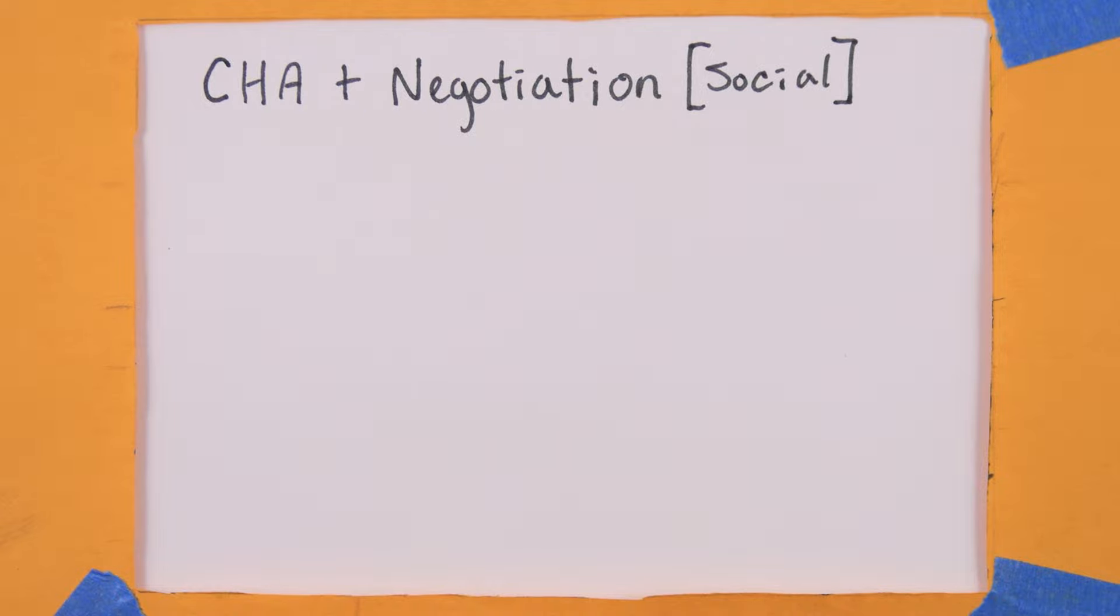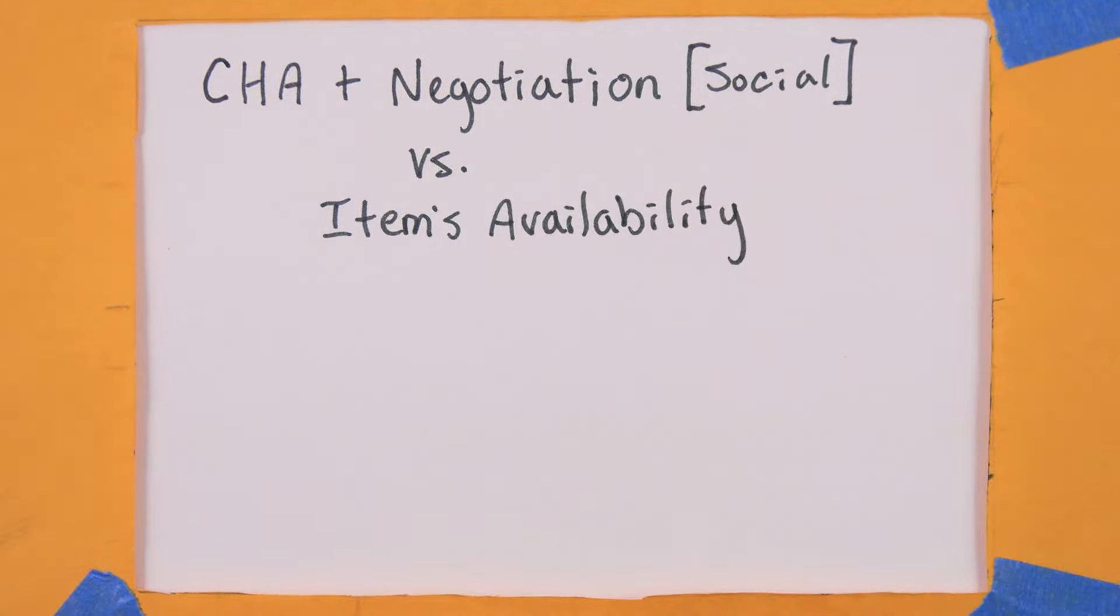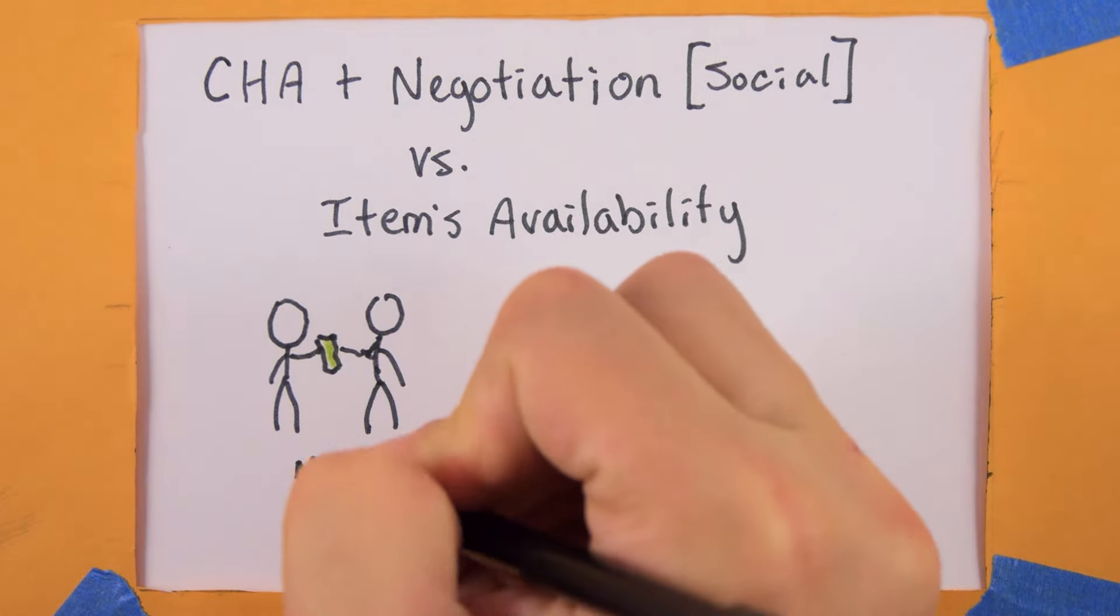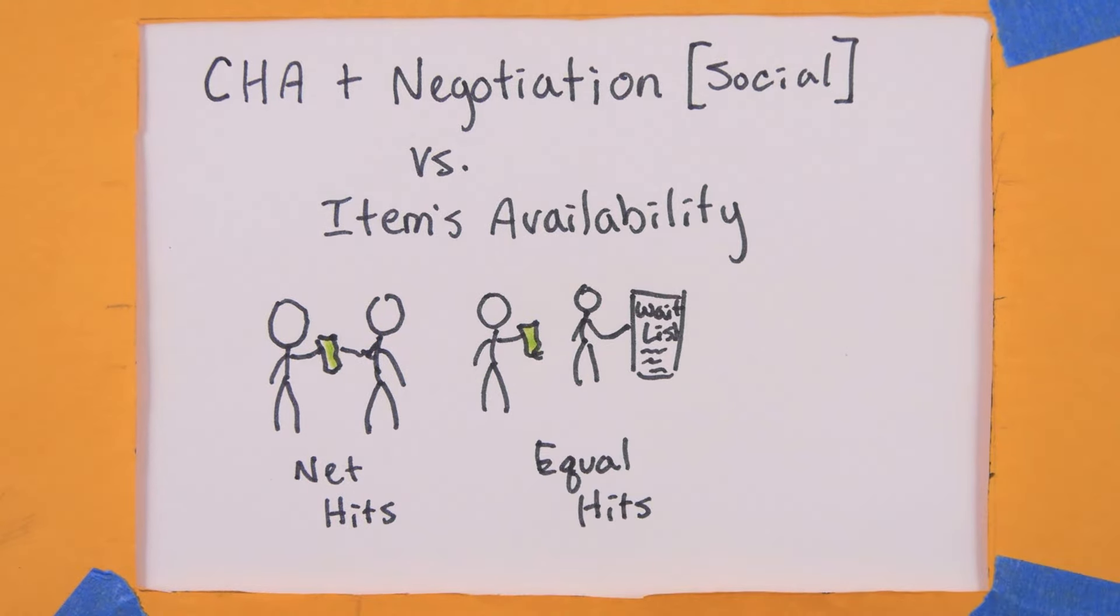Your skill check is opposed by a dice pool equal to the availability number of what you're trying to buy. If you get more hits, you can buy it. If you tie, you can still buy it, but it takes twice as long to acquire.